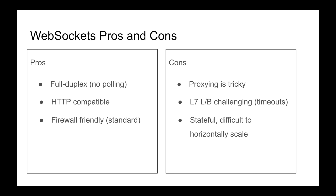That doesn't mean you cannot horizontally scale — you can. You can persist the sockets by writing smart applications that use a third-party service like a Postgres database to persist the connection IDs. You maintain the state in the database, and even if the server dies, it can read back all the connections from the database and re-establish them. It's still not easy — the client also has to be written to handle the statelessness. It's not impossible, but it's very tricky.